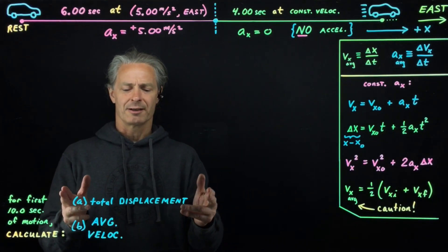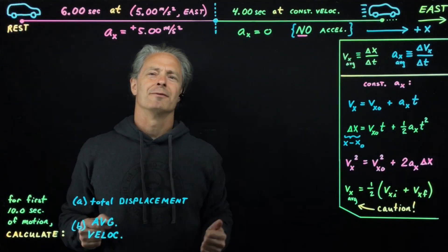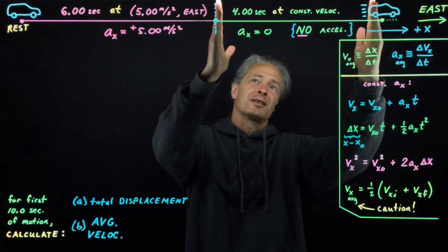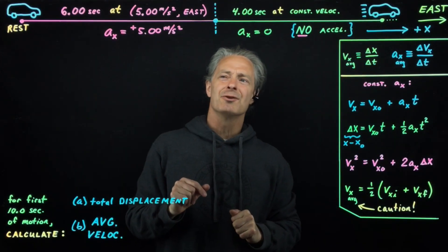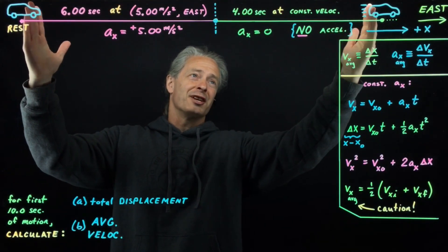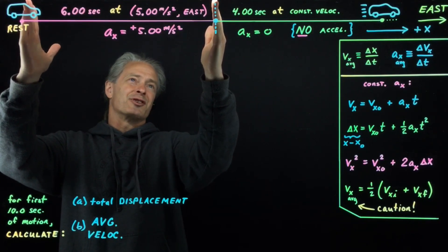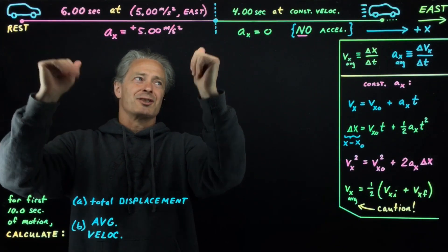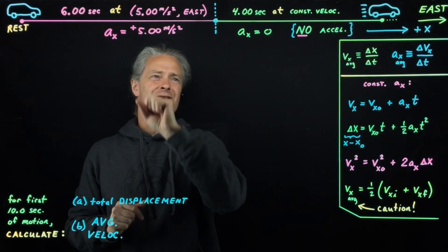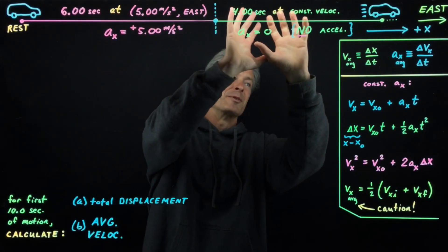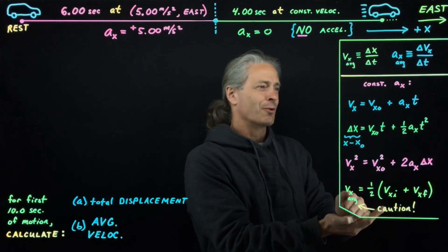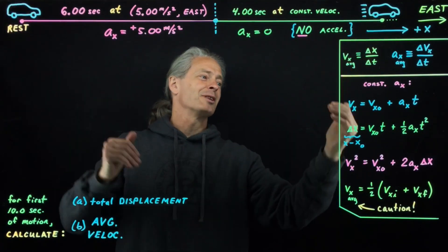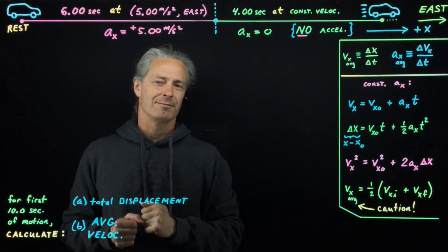Let's tackle part A, calculating the total displacement for the first 10 seconds of motion. What we're going to need to do is calculate the displacement for the first six seconds and then calculate the displacement for the next four seconds separately. The reason we need to do that is we don't actually have constant acceleration for a full 10 seconds. We have constant acceleration equal to five meters per second per second east for six seconds, then constant acceleration of zero for the next four seconds. So we have two segments of constant acceleration, but they're different constant accelerations — the acceleration changes going from one segment to the next. These equations require a single value of the acceleration, so I can't use one of these equations for the full 10 seconds.